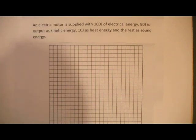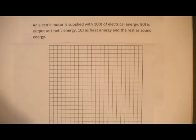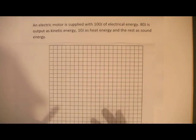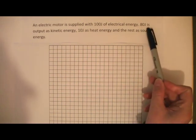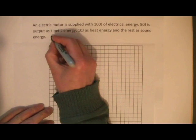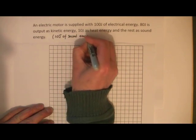Here I've got some information about a motor, and I'm going to use it to draw a Sankey diagram. An electric motor is supplied with 100 joules of electrical energy, 80 joules output as kinetic energy, 10 joules as heat energy, and the rest as sound energy. Using the law of conservation of energy, if 100 joules goes in, a total of 100 joules must come out. 80 plus 10 is 90, so there must be 10 joules of sound energy.